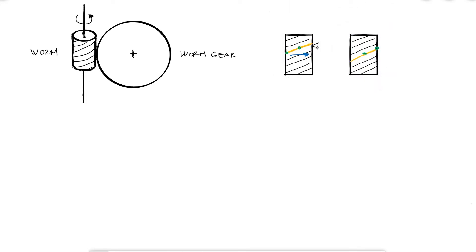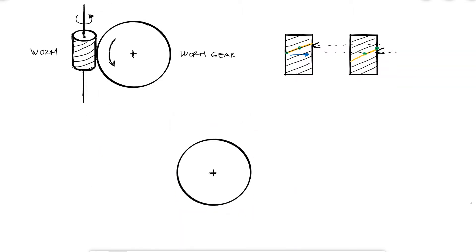A tooth from the worm gear that was touching the thread has now moved downward, meaning that the worm gear is rotating counterclockwise. If the worm gear is rotating counterclockwise, it means that the tangential force it receives from the worm is facing down. I will use the notation g for the worm gear and w for the worm.